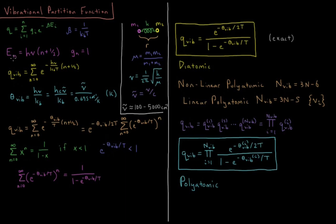The energy levels that come out of quantum mechanics — which you can look at in the harmonic oscillator playlist if you prefer — depend on a quantum number n, and they're equal to Planck's constant times our vibrational frequency times the quantum number n plus 1 half. So n is a quantum number that starts at 0 and goes up to infinity, and the degeneracy of each energy level is going to be 1.